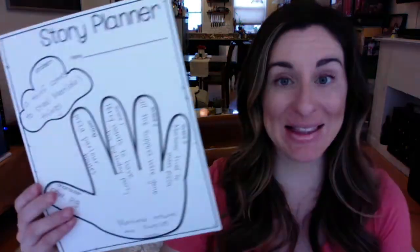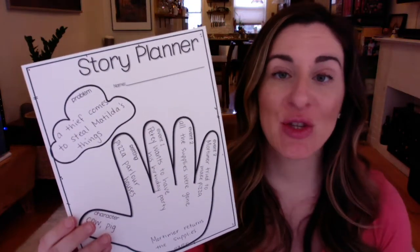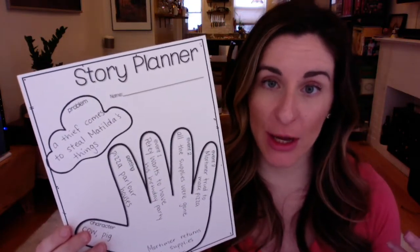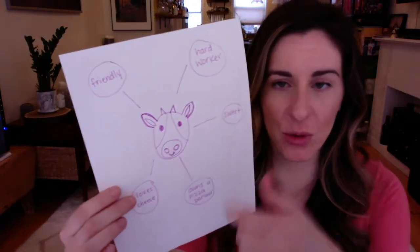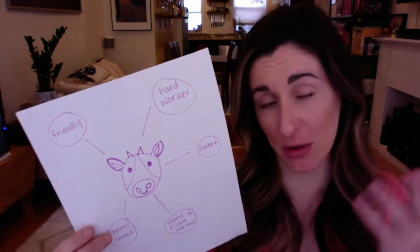Okay writers, let's get started on our writing for today. Hopefully you are able to locate your story planner today as well as your story that you've been working on, and also see if you can find that original page where we drew a sketch of the character and drew circles around it to show some character traits that that character might have. Make sure you have a clean page for today too.